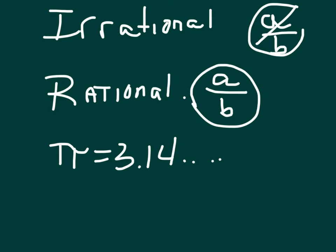Because if it can be written in the form of A over B, then that means it either terminates or it repeats itself. So you have two types of numbers that make up all real numbers: irrational numbers and rational numbers.